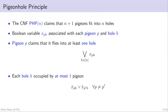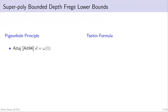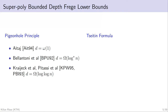We also mention the pigeonhole principle, for which we also have lower bounds. This CNF claims that N+1 pigeons fit into N holes. We have a Boolean variable for each pigeon-hole pair; if set to true, the pigeon goes to that hole. We have axioms claiming each pigeon goes into at least one hole and each hole is occupied by at most one pigeon. Clearly with N+1 pigeons and N holes it's unsatisfiable. These are the two main formulas for which we have lower bounds.